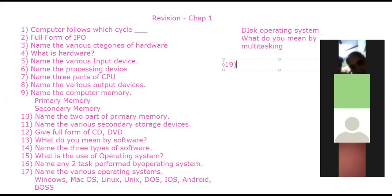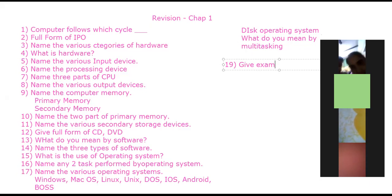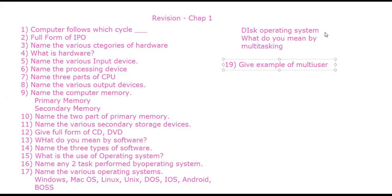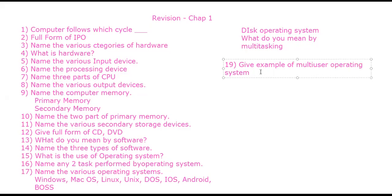Question number 19 — give examples of multi-user operating systems. Examples of multi-user operating systems are Linux and Unix. Also, Windows is a multi-user operating system.